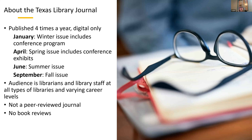It's published four times a year. The winter issue that comes out in January includes the conference program, and copy for that is due around early December. The April issue comes out a couple of weeks before conference and includes the conference exhibits listing. Then in June we have the summer issue and in September we have the fall issue.